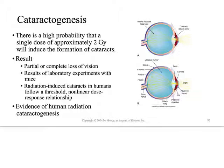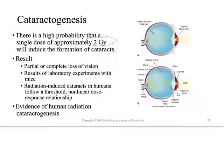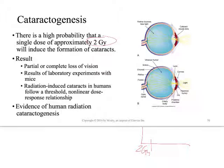Cataractogenesis is a deterministic late effect with a threshold of approximately two gray. This is a cumulative amount. Someone who works in fluoroscopy every day near the primary beam should be wearing lead goggles to reduce cumulative radiation exposure to below this two-gray threshold. No single fluoroscopy procedure should deliver two gray, but over five or six years it is possible. So we have a deterministic late effect of cataracts being caused by radiation exposure, following a threshold response: after two gray, the severity and incidence of cataracts will increase.